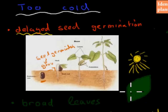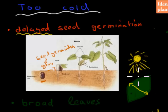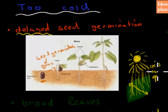Another cold response is broad leaves. Leaves have lots of chemical reactions occurring inside, so the temperature needs to be warm enough. Broad leaves refer to the width of the leaf. If it's broad, there's more surface area to be warmed up by the sun, which increases the temperature of the leaf. So broad leaves are useful when it's too cold.